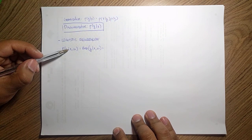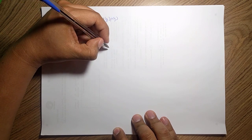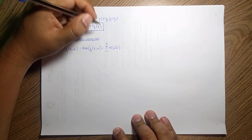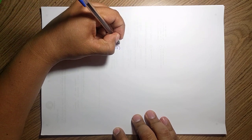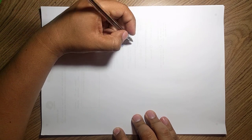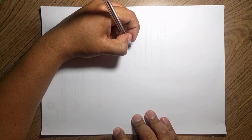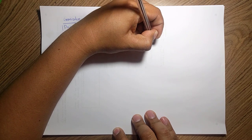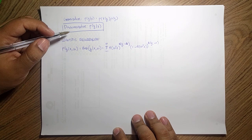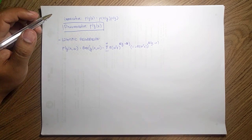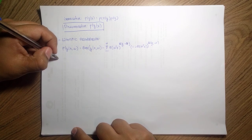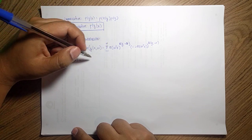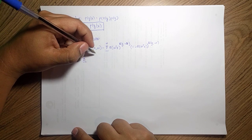Since we're going to use all the data, we have the product from i=1 to n of the sigmoid of w-transpose times x_i, weighted by an indicator function for the positive class (y_i=1), and one minus that sigmoid for the other class (y_i=0). We are actually more interested in the logarithm of this, so we take the log, turning the product into a summation from i=1 to n.